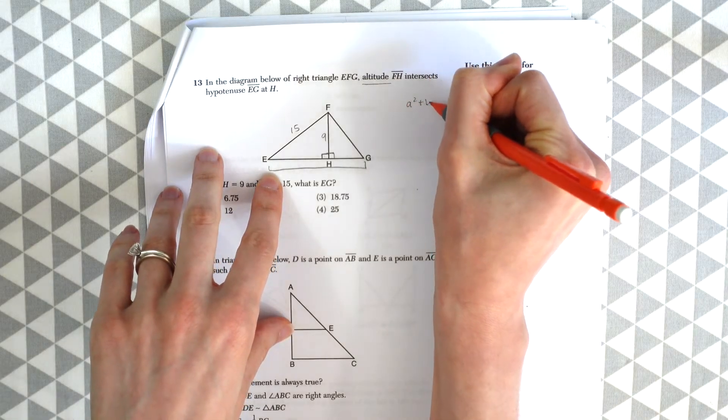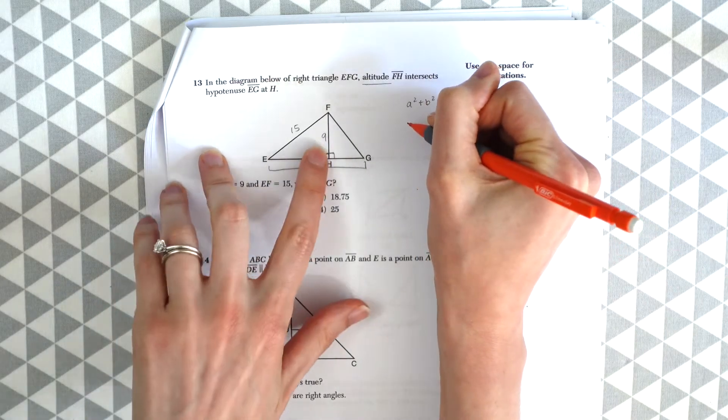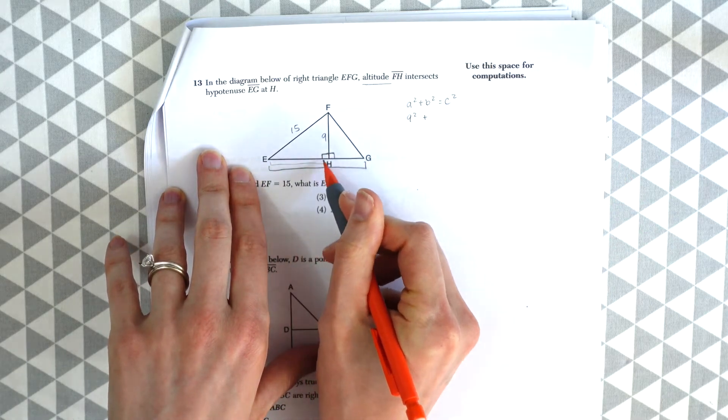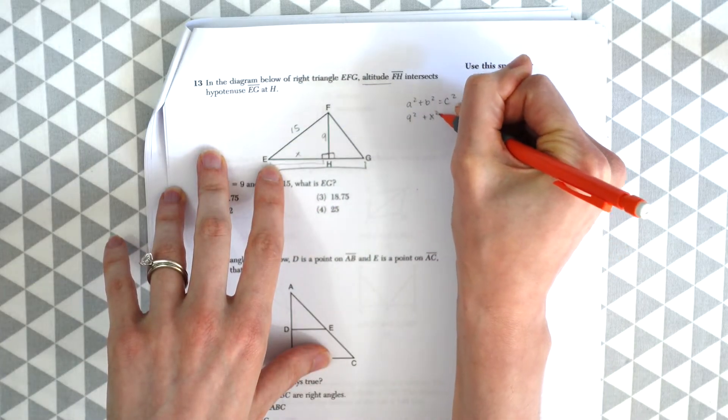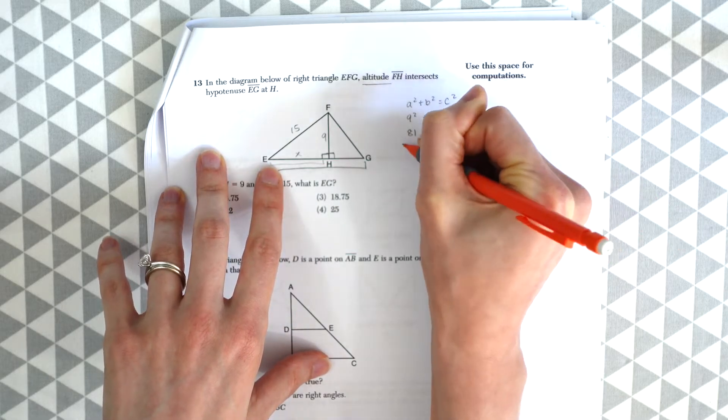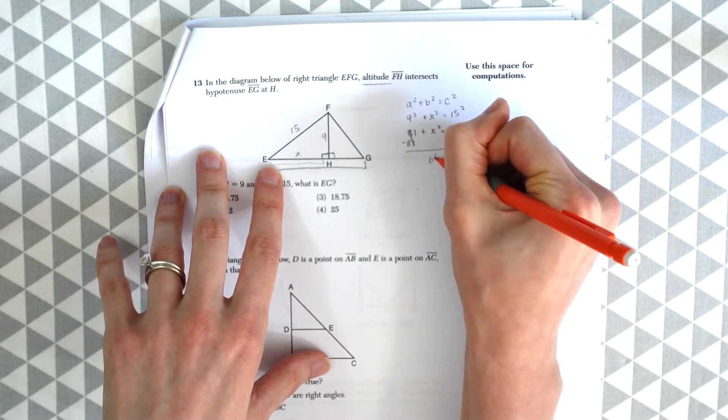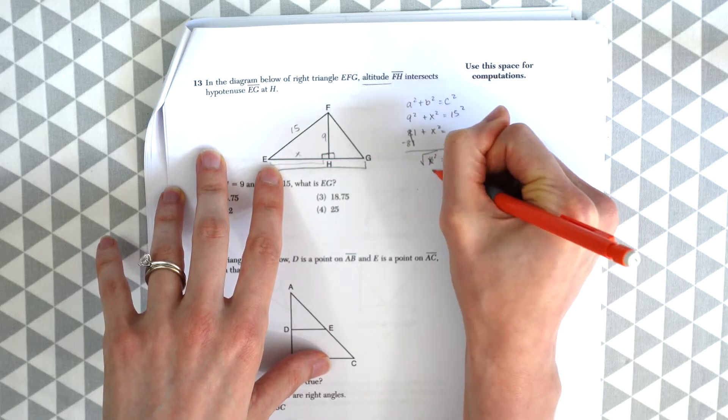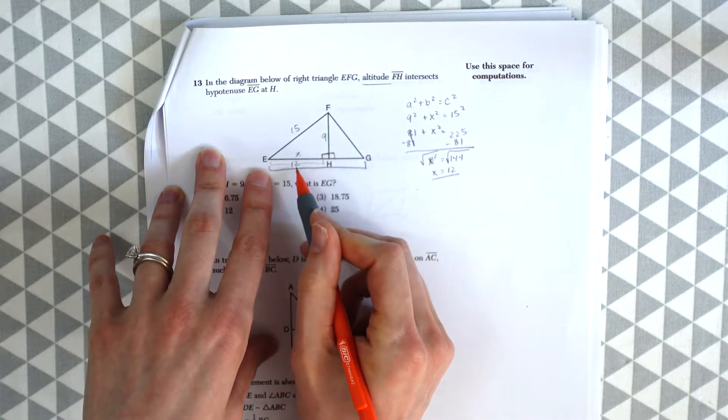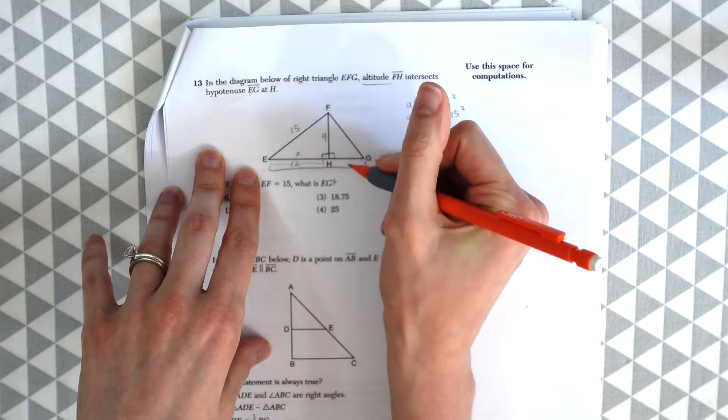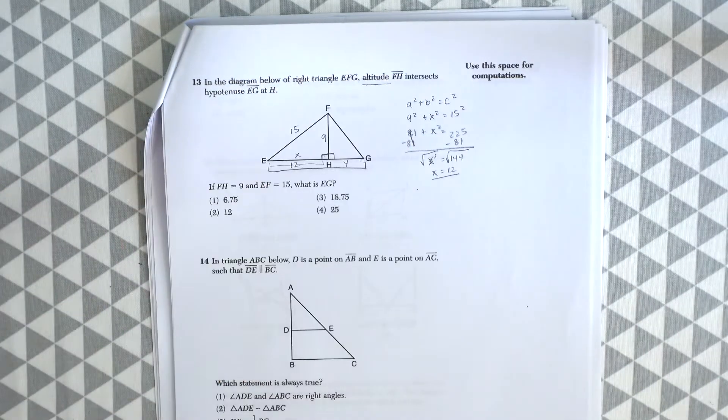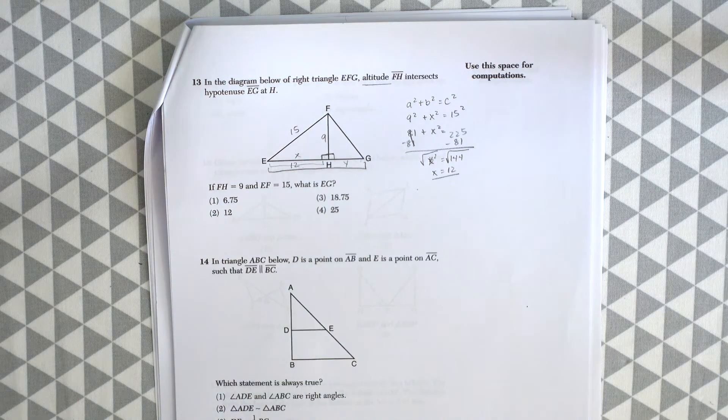So we have A squared plus B squared equals C squared. Just filling in the sides. We have 9 squared plus, and then we have this length here, let's call it X. X squared equals 15 squared. So we know that right here, this section is going to be 12. But we still don't know what this whole section is. So we can call this Y. So we've got that part. So now, what's the next part?